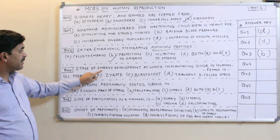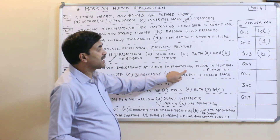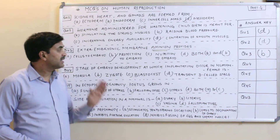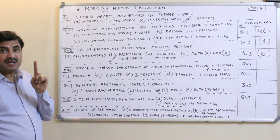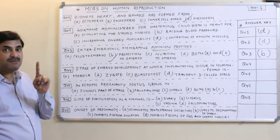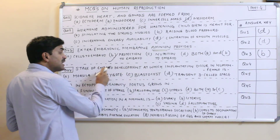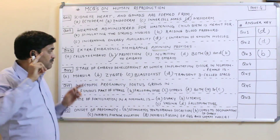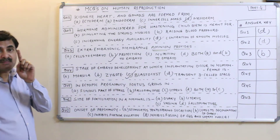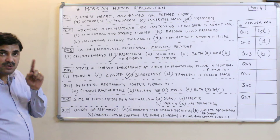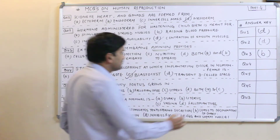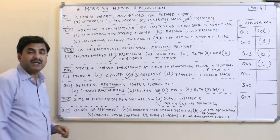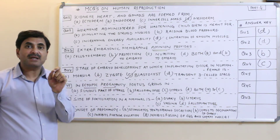Question number four: at what stage of embryonic development does implantation occur in the human female? Implantation means the stage at which the embryo gets established at the endometrium of the uterus. The stages are: morula, blastocyst, and gastrula. In human beings, the blastocyst is the stage responsible for implantation on the endometrium of the uterus.